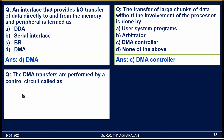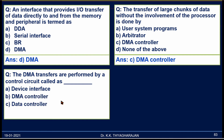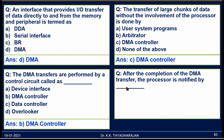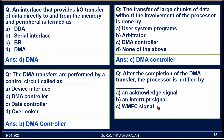The DMA transfers are performed by a control unit called: A) Device Interface, B) DMA Controller, C) Data Controller, D) Overlooker. The correct answer is B, DMA Controller. After the completion of DMA transfer, the processor is notified by: A) Acknowledgement Signal, B) Interrupt Signal, C) WMFC Signal, D) None of the mentioned. At the end of the DMA process, the DMA Controller activates an interrupt so the CPU will terminate the DMA process. The correct answer is B, Interrupt Signal.